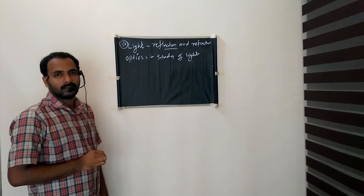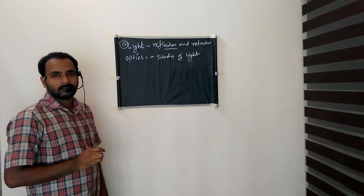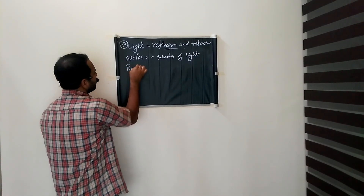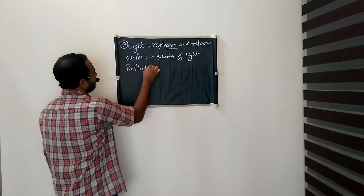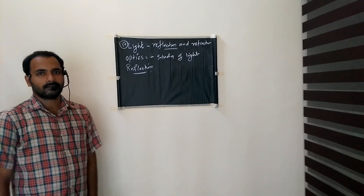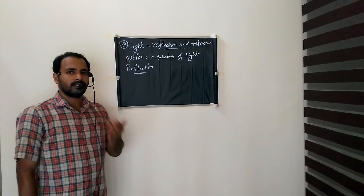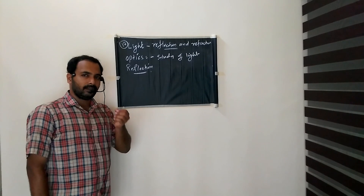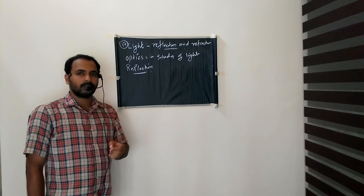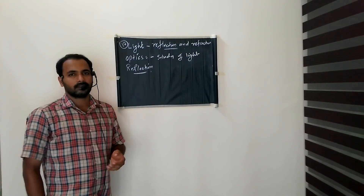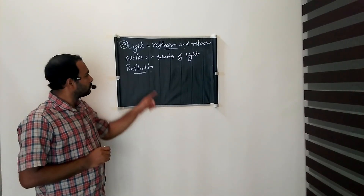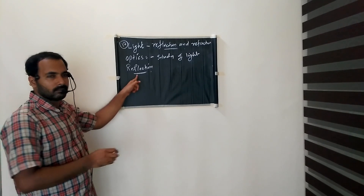In this chapter the first main topic is reflection. When light falls on a smooth surface it rebounds. That phenomenon is called reflection.